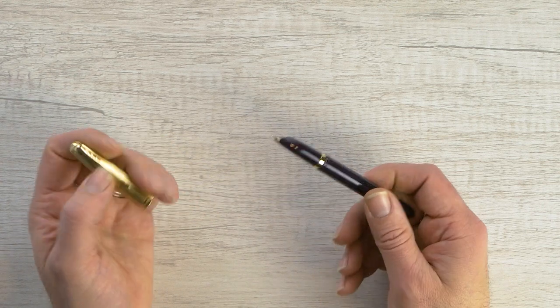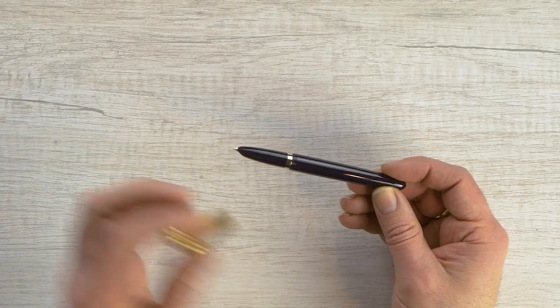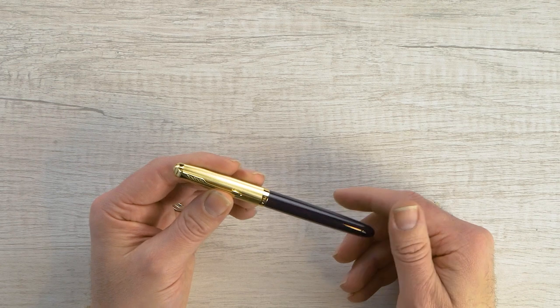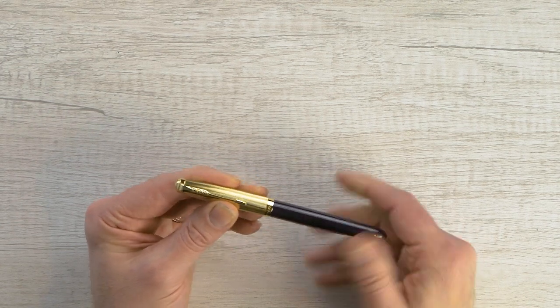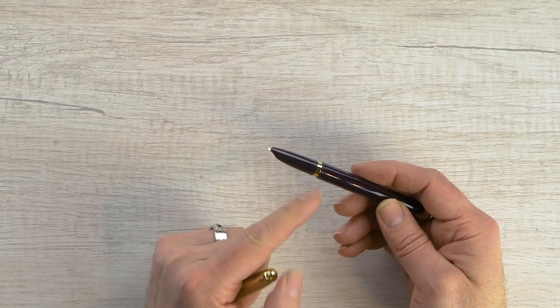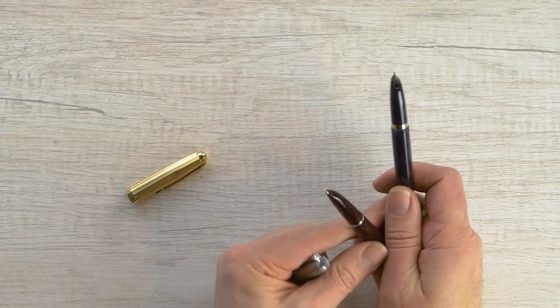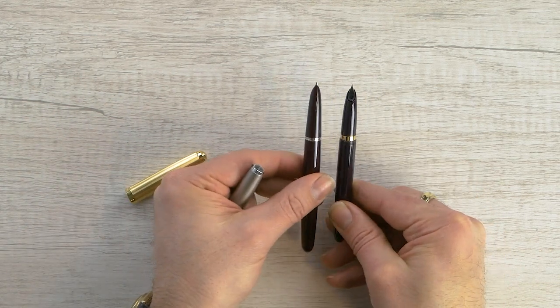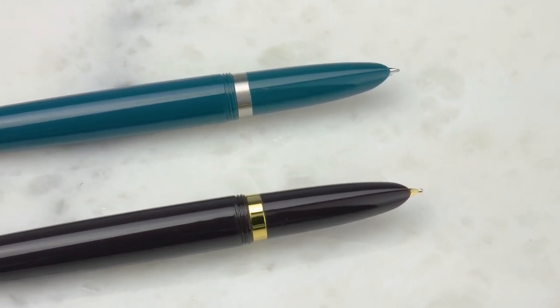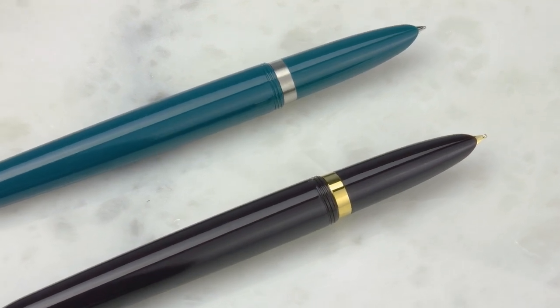Now, the big thing that's completely different about the original versions that you've already seen is this is a threaded cap. So this really, it goes on securely. It's not a friction-fit cap like the originals. But it unscrews. We've got a little trim ring here, which is reminiscent of the original clutch ring, which we have here. A little bit bigger. Obviously, it's a decorative purpose. Serves a decorative purpose here.